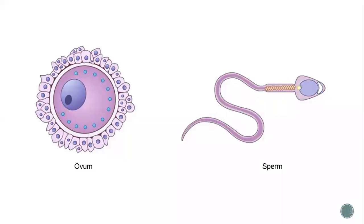In this image, we can see the two reproductive cells: the ovum or egg, which we call the female gamete, and the other one is sperm, the male gamete.